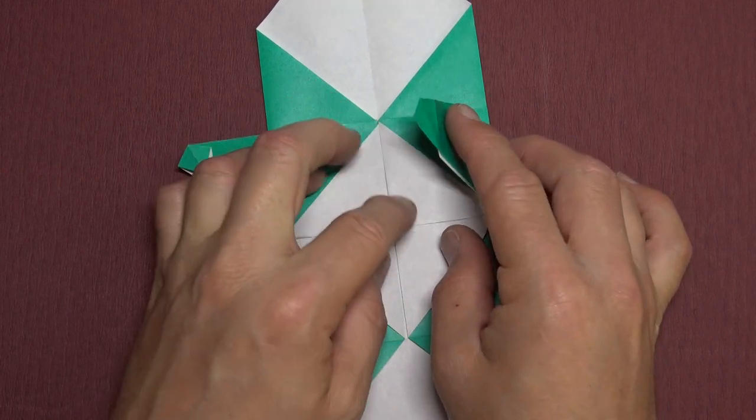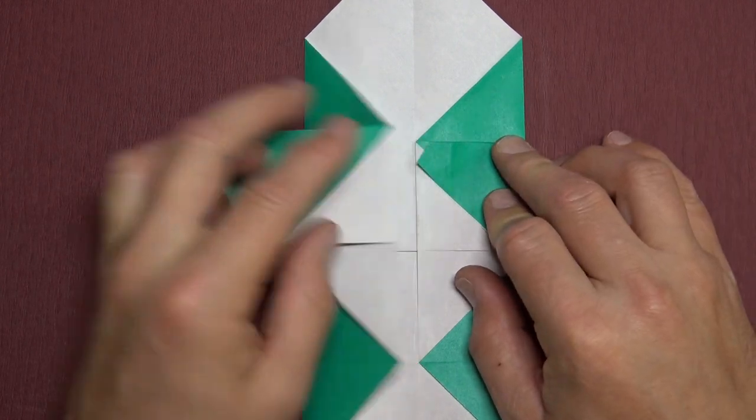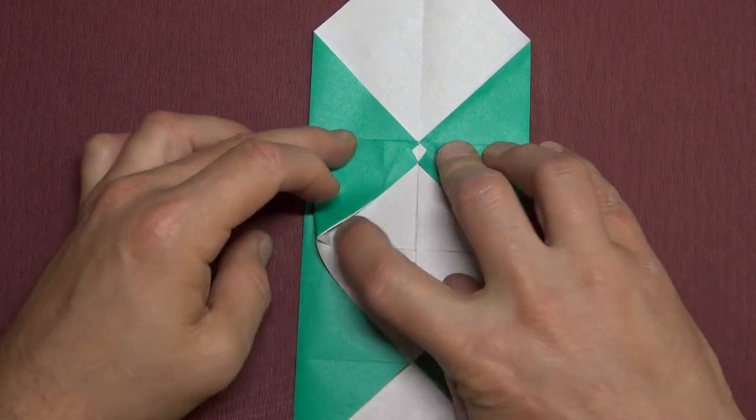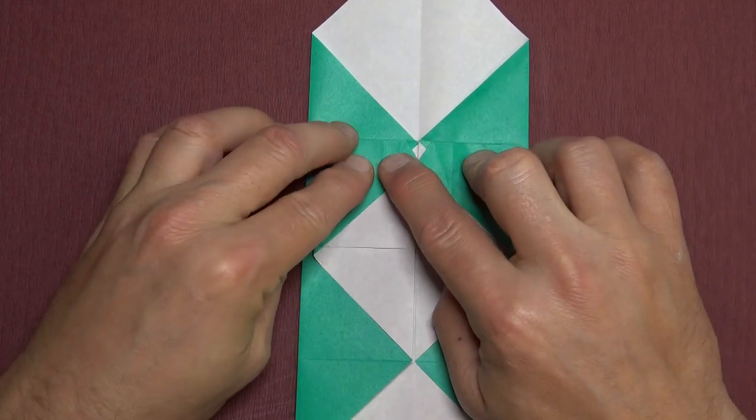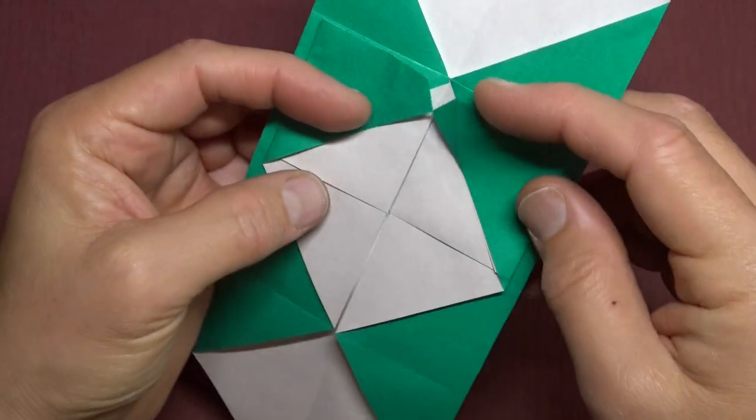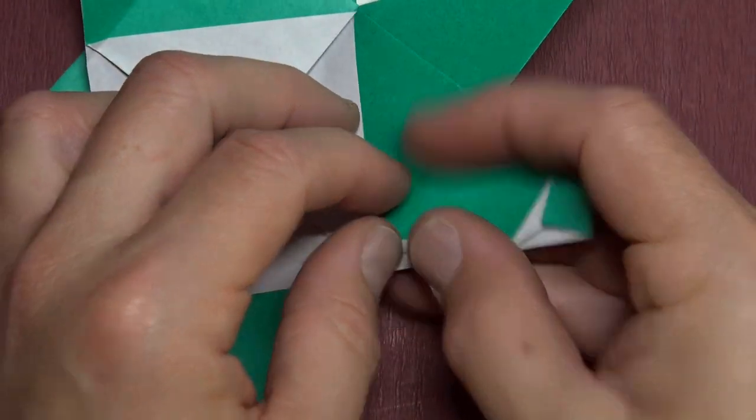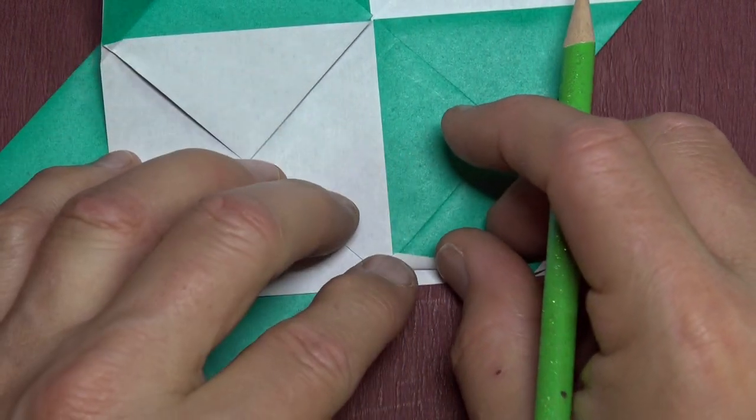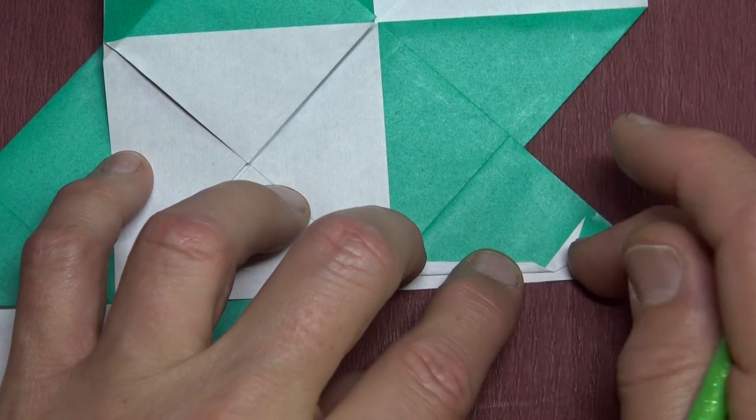Now fold this flap to the middle. Make sure that these edges align. So it's like that. And repeat. So the two flaps touch in the middle. And unfold the flaps. And now fold this flap up so that the edge touches this point. Like that. And this is the arm. You can taper it so it gets a little bit more narrow.